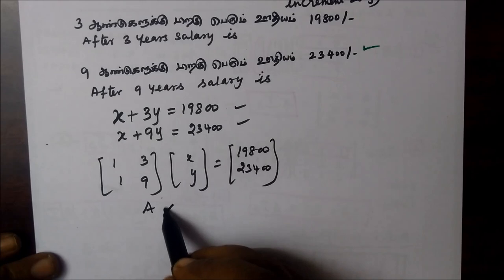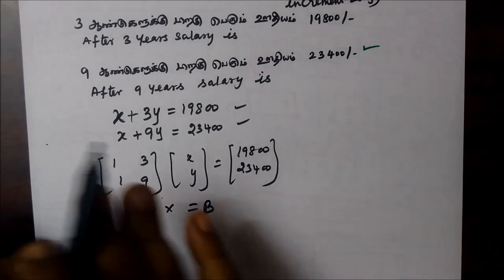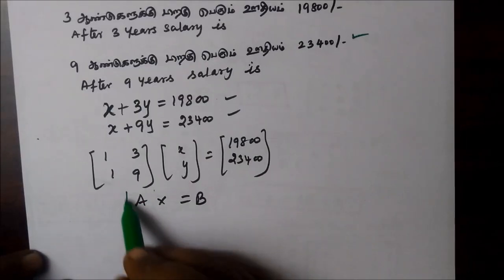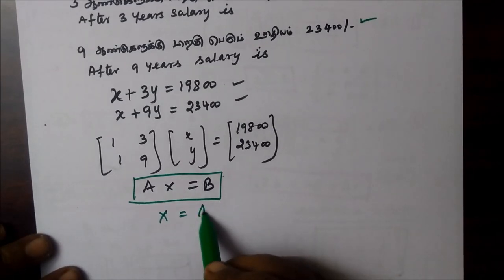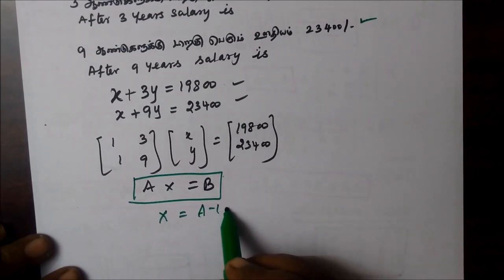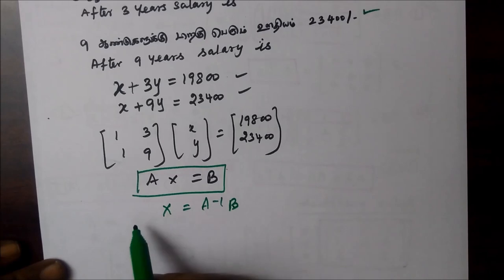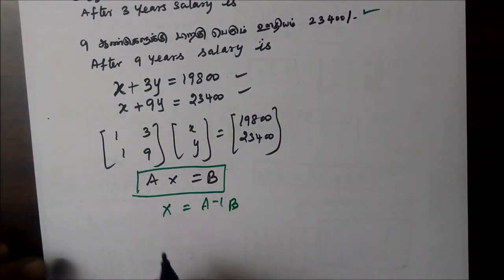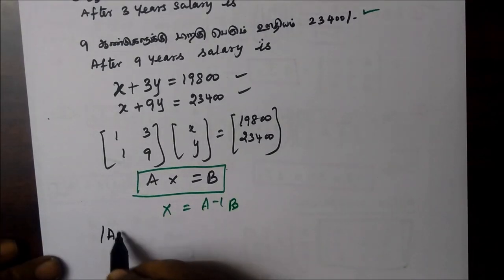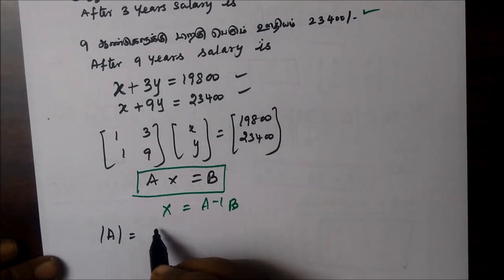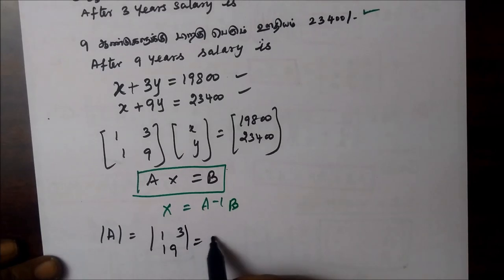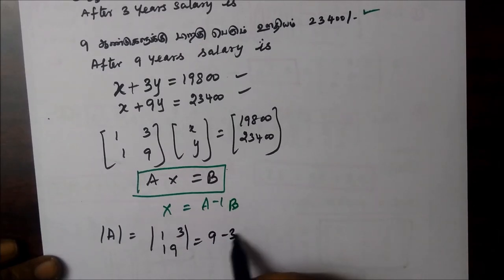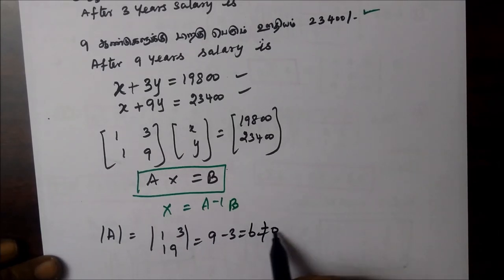Let's write Ax = b. Now let's write the determinant of A. For a 2×2 matrix it is very easy. The matrix A is [1, 3; 1, 9]. The determinant is 9 minus 3 equals 6, which is not equal to 0. That means A inverse exists.